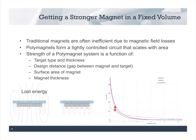Check out the force curve on the right, which shows a comparison of polymagnet forces to a conventional magnet. The red arrow shows the difference in force at a particular design gap between the magnet and the target. You can see we can get a good bit more force from a polymagnet than from a conventional magnet. Several things affect this gain in strength: the target type and thickness, the design distance or gap between the magnet and target, the surface area of the magnet which scales the force, and magnet thickness — though that matters less than you might expect.